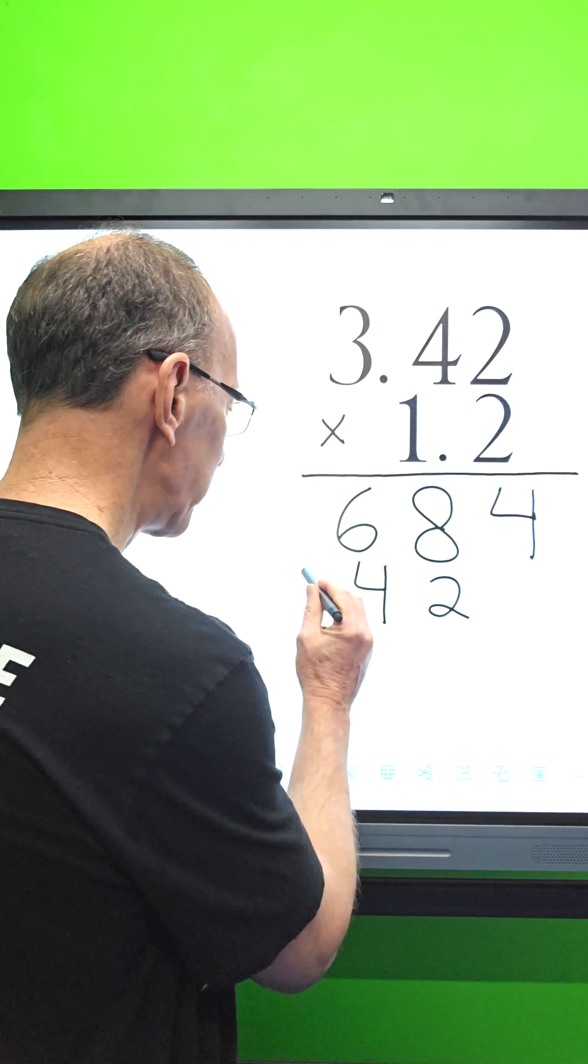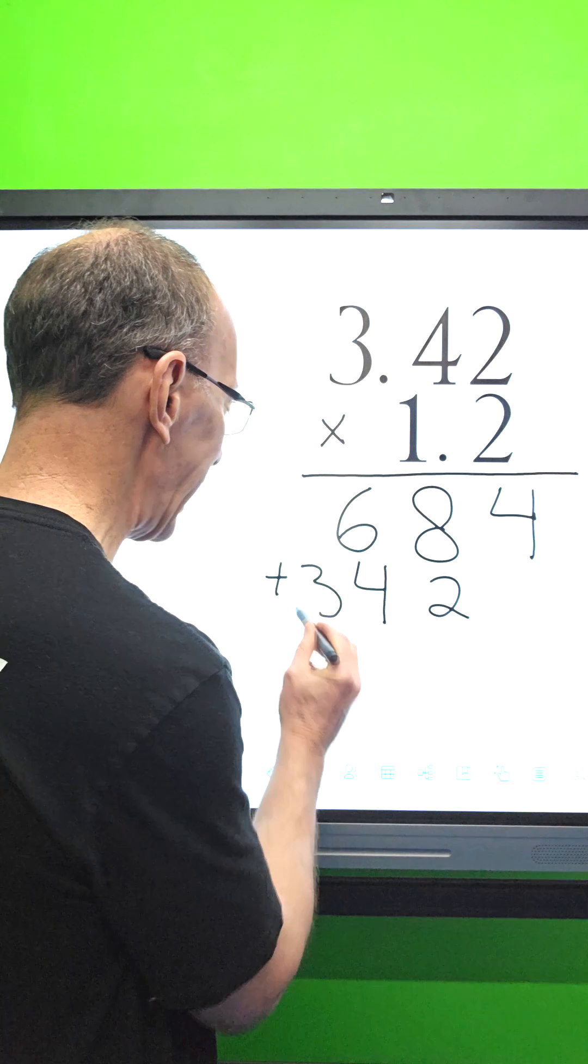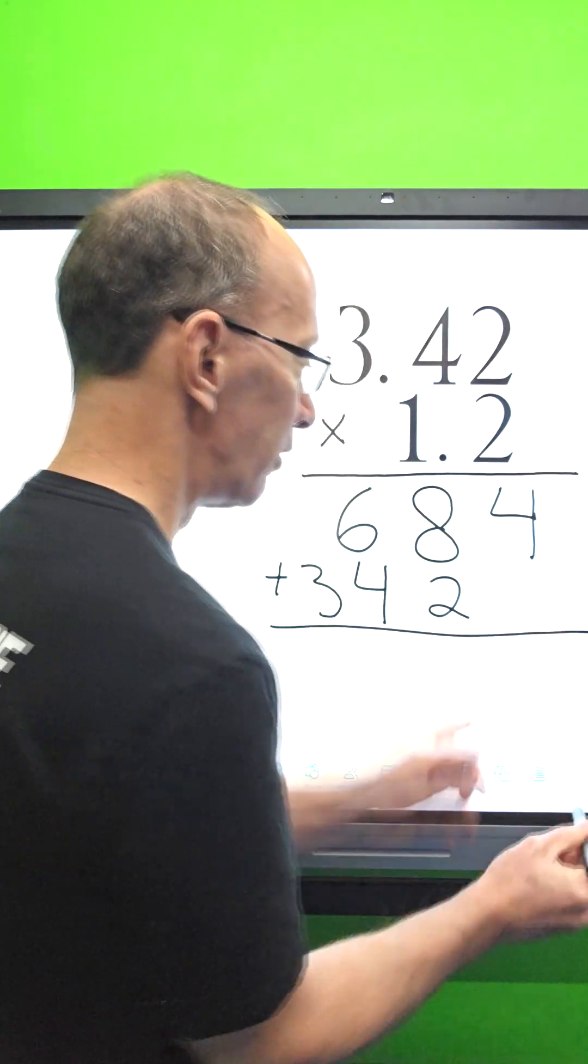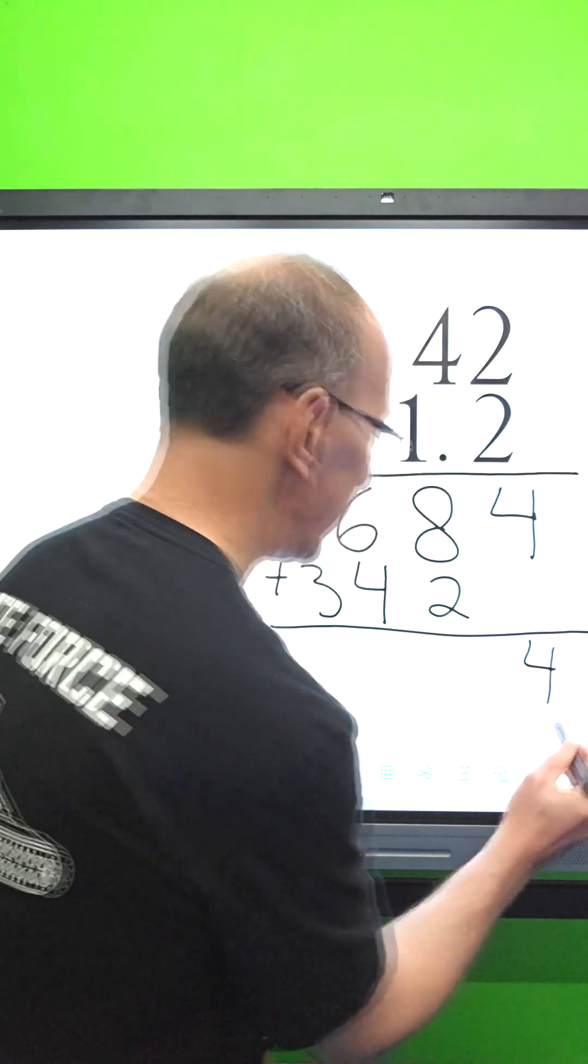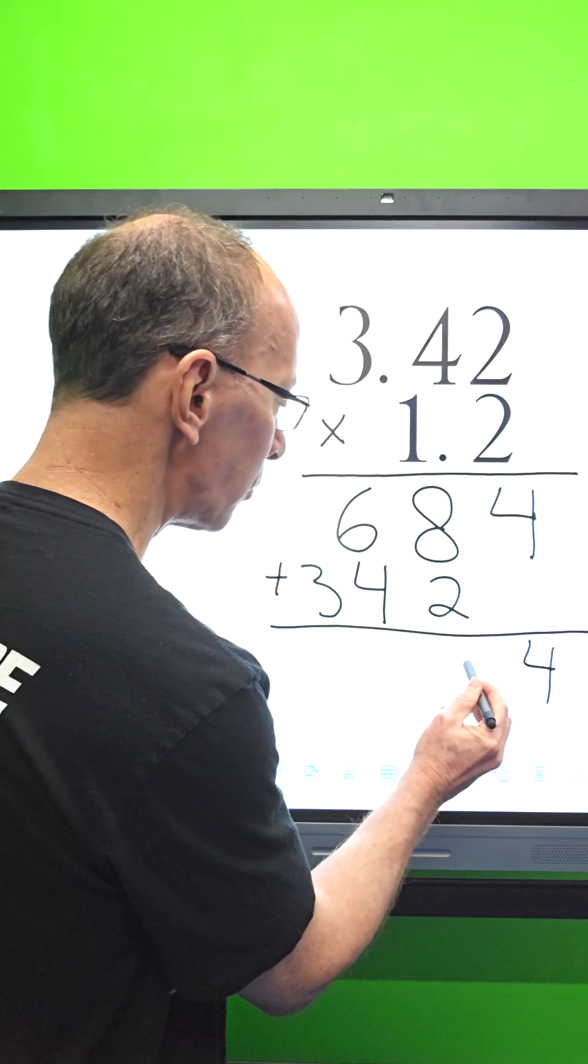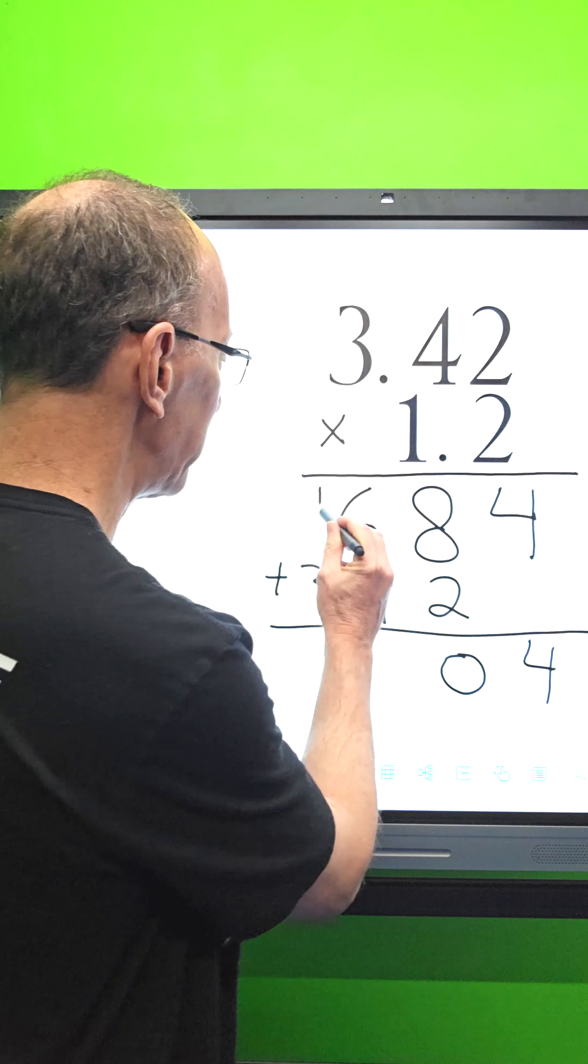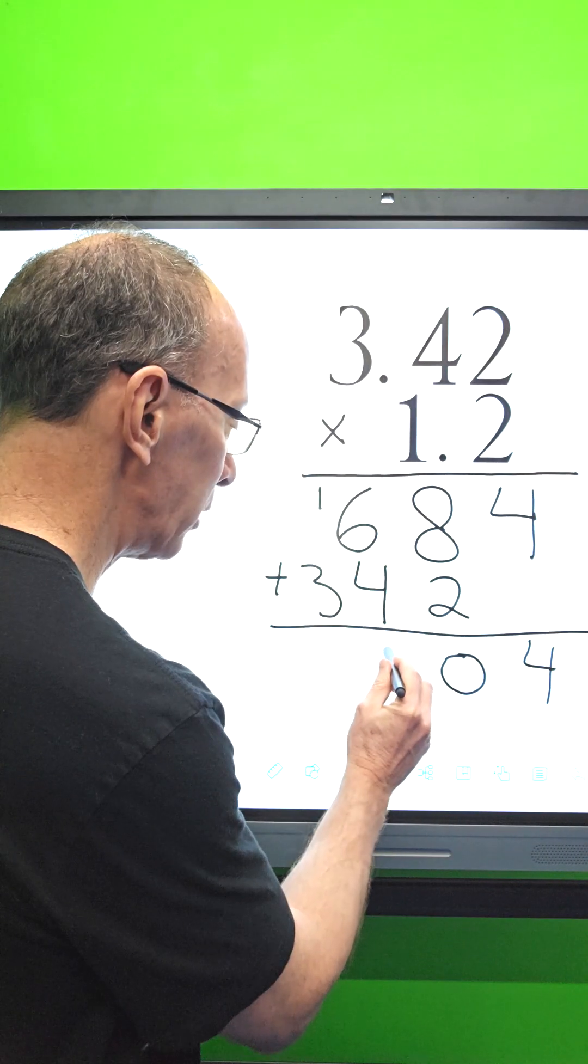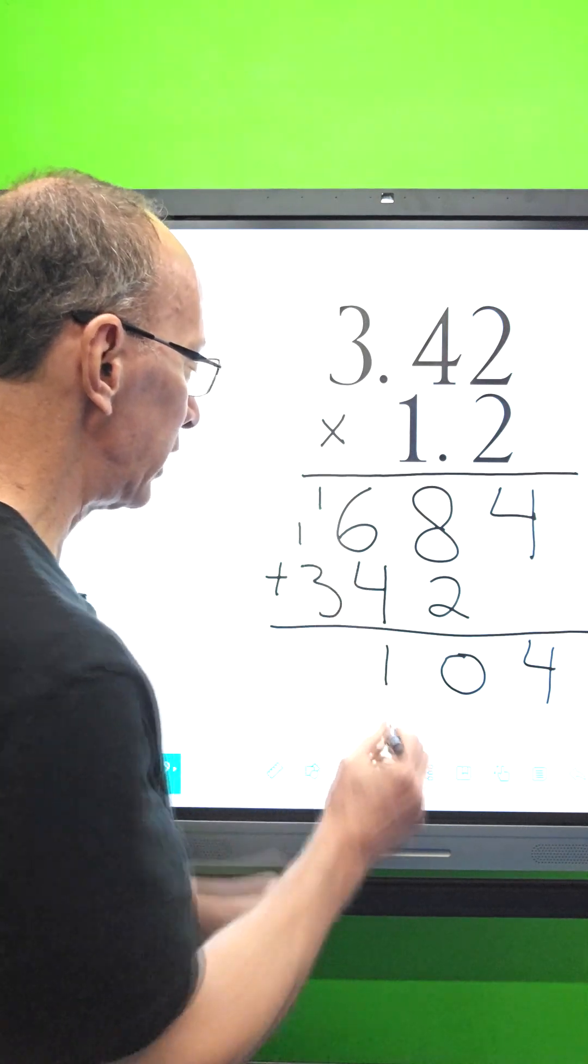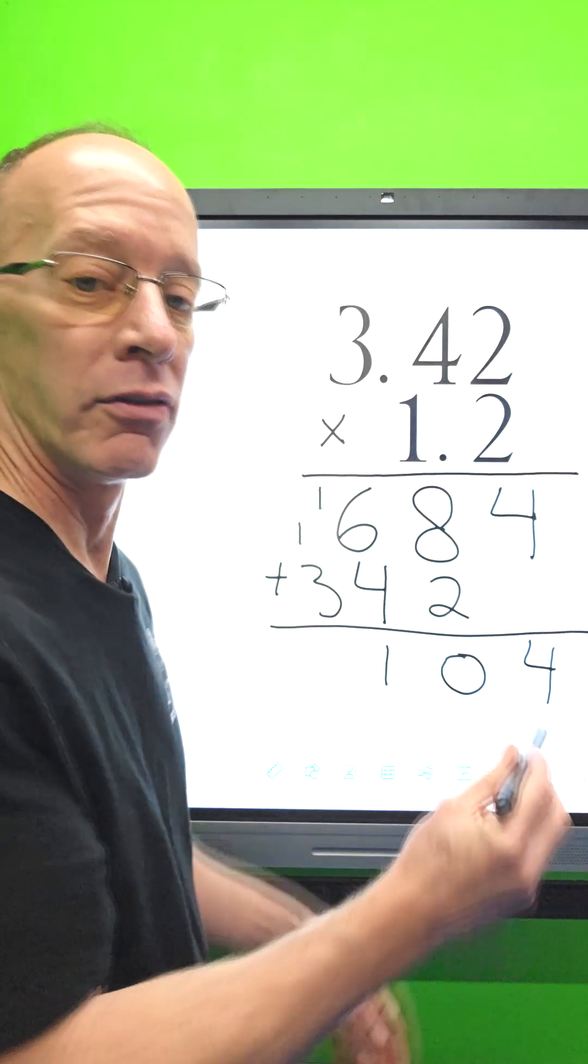Four plus zero is four, so I put four right here. Eight plus two is ten, carry the one. Put that one right up here. And then six plus four is ten, plus the one is eleven, so I put the one up here, put the other one over here. And then three plus one is four, so I put the four right here.